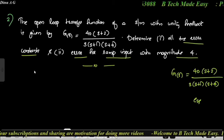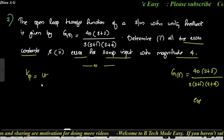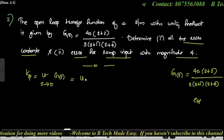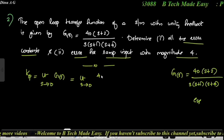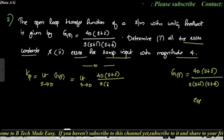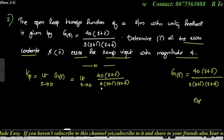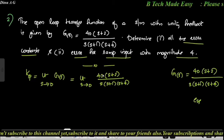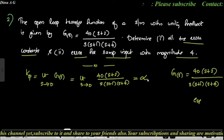Kp = limit s→0 of G(s) = 40(s+2) / [s(s+1)(s+4)]. As s→0, any quantity divided by 0 equals infinity. Therefore Kp = infinity.